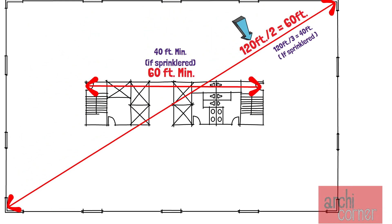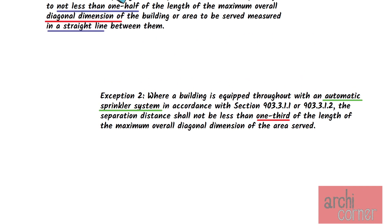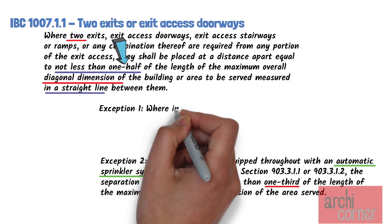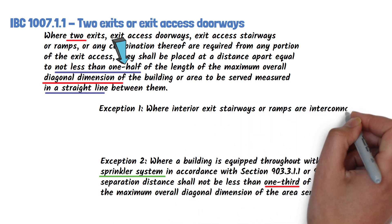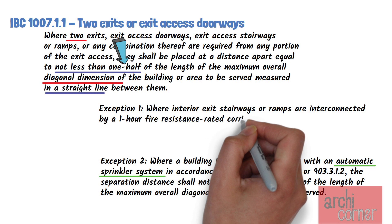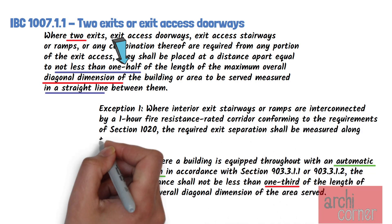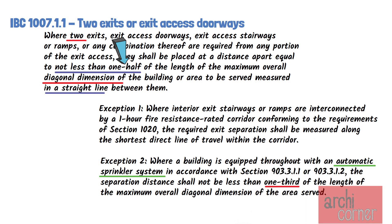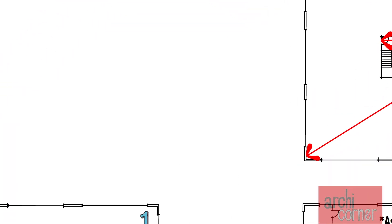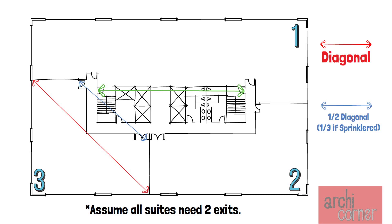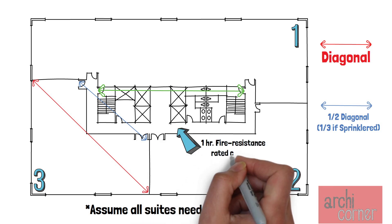There is one last exception I want to point out — the exception we skipped earlier. Let's go back and read exception number 1. It says: Where interior exit stairways or ramps are interconnected by a one-hour fire resistance rated corridor conforming to the requirements of section 1020, the required exit separation shall be measured along the shortest direct line of travel within the corridor. This exception only applies if you have a one-hour fire resistance rated corridor that interconnects your exit stairway or ramp. Looking at our plan, if this corridor is a one-hour fire resistance rated corridor, then this exception would apply.